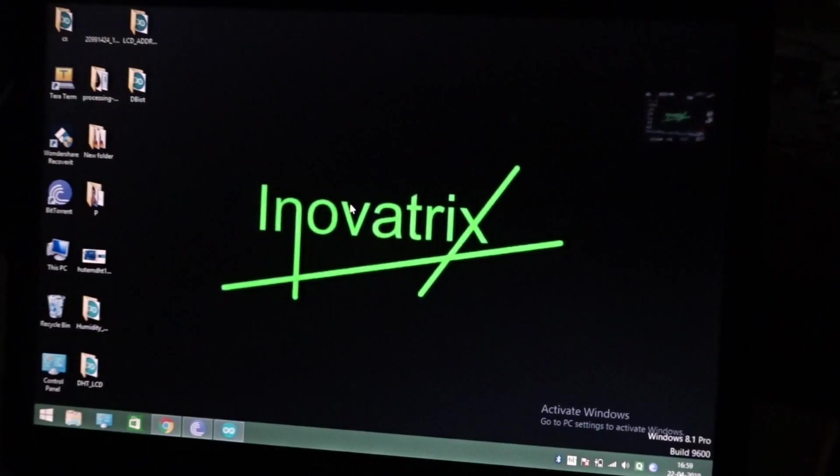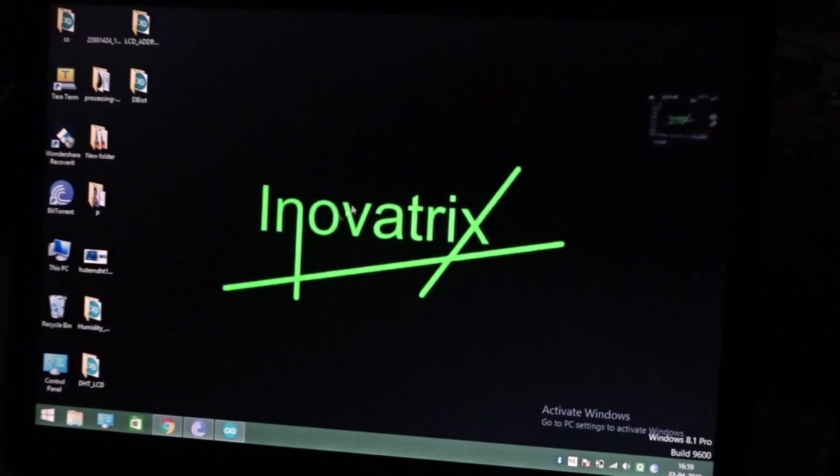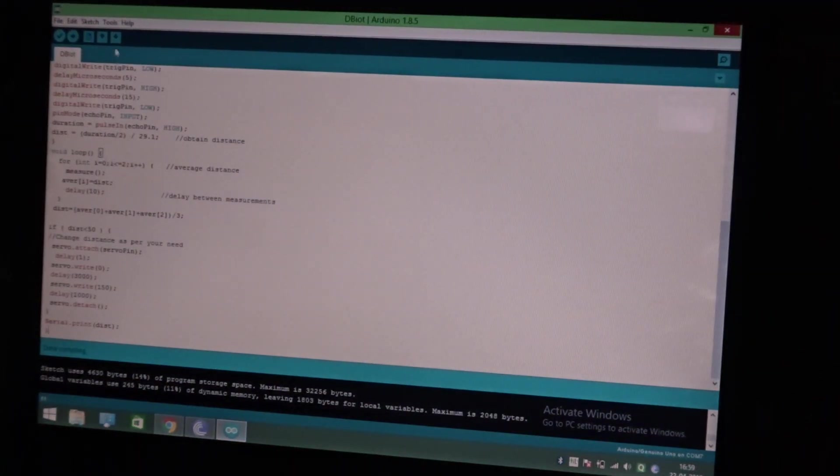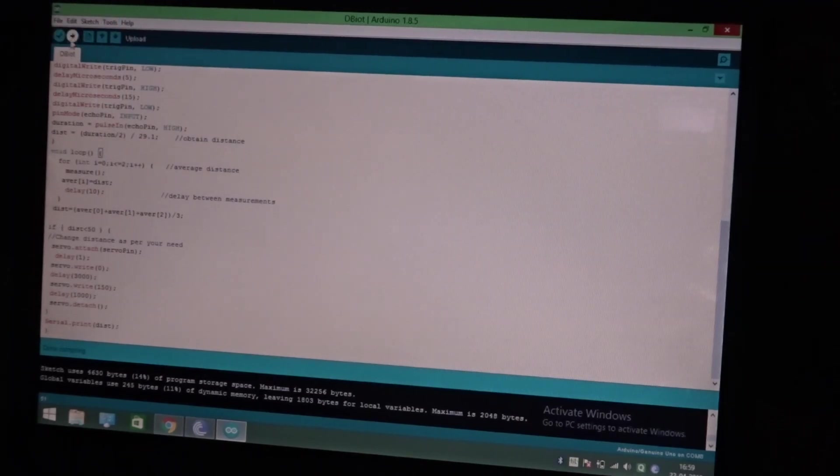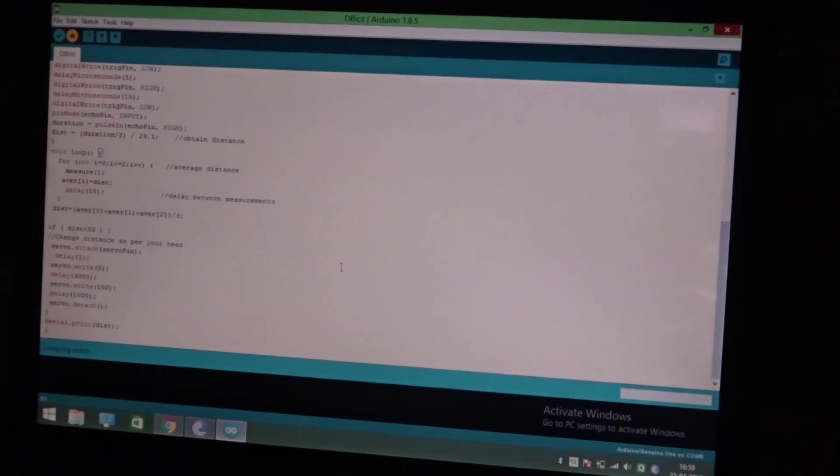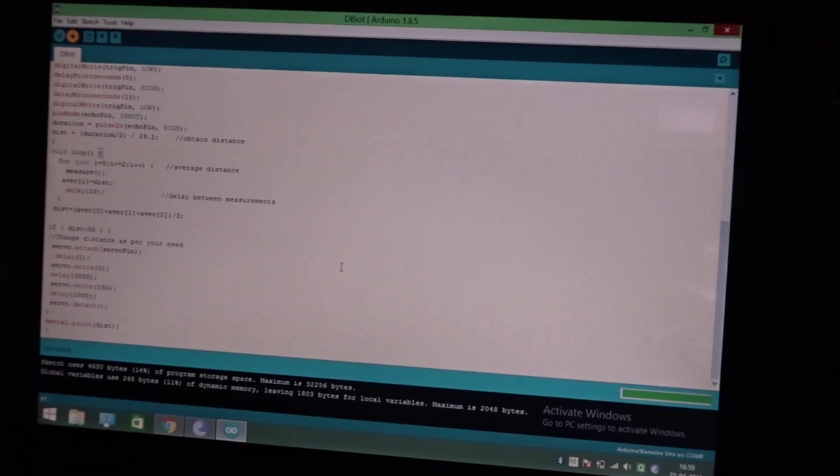So plug the Arduino to the computer and open up the code which we have given in the description as always. Go to the tools, select the port which is COM6 in this case, and then simply click on upload. You don't need any special library for this because the servo library is already in the Arduino software and the sonar sensor does not require a library. So now the code is uploaded. Now we can go ahead and test it.